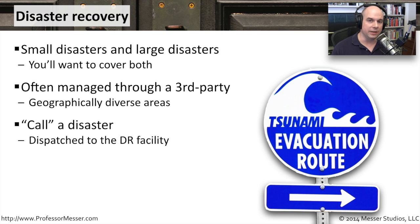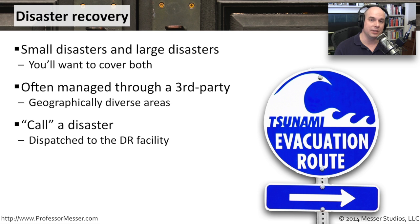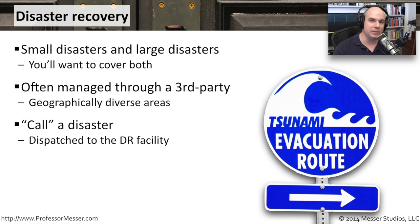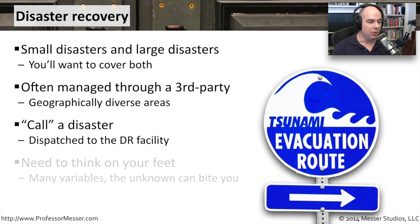Generally, when a disaster has occurred, there's a set of processes and procedures for calling that disaster. Because when you start the disaster recovery process, there are some costs associated with that — we're dispatching people. At that point, everything goes into action. We look at our plan of attack. We've gone through all the things we've been planning for, and now we're actually executing on it.